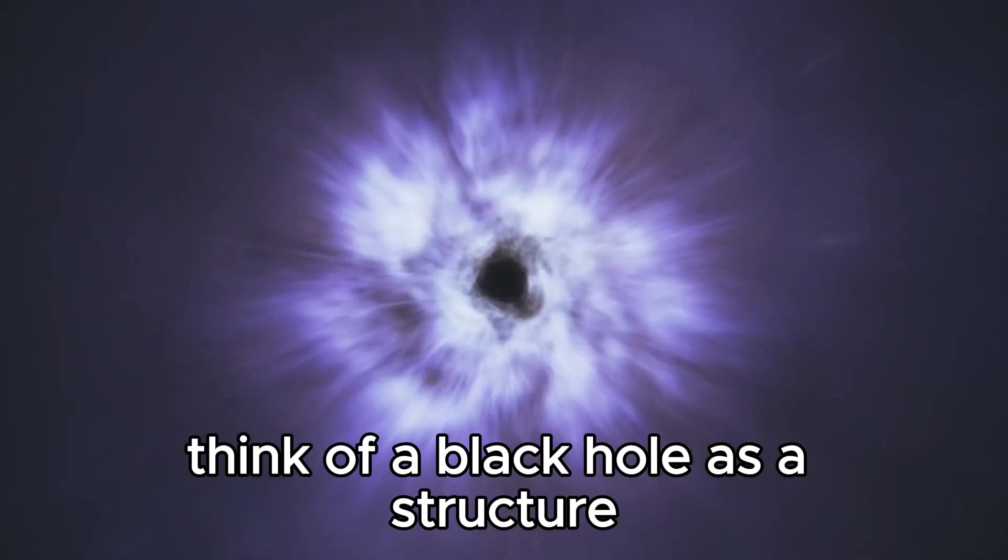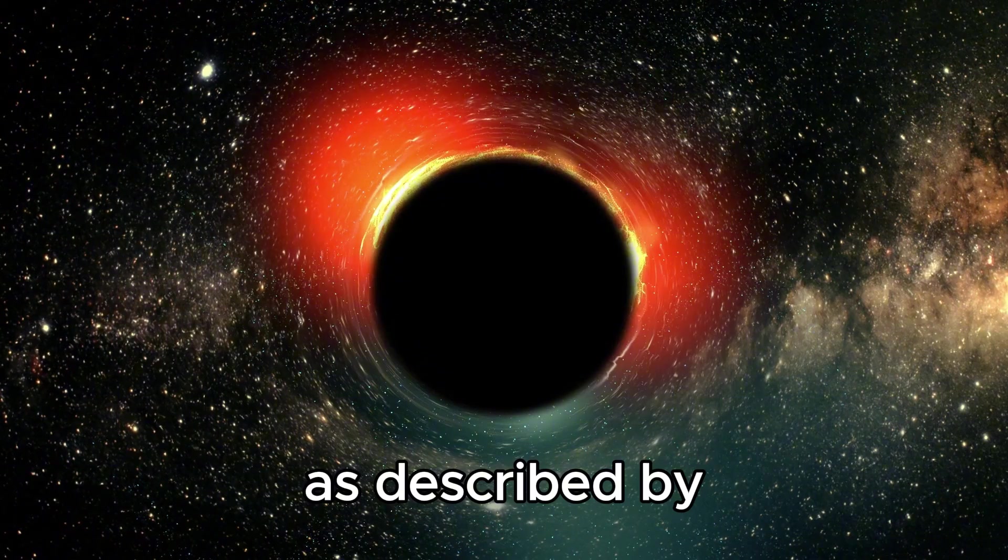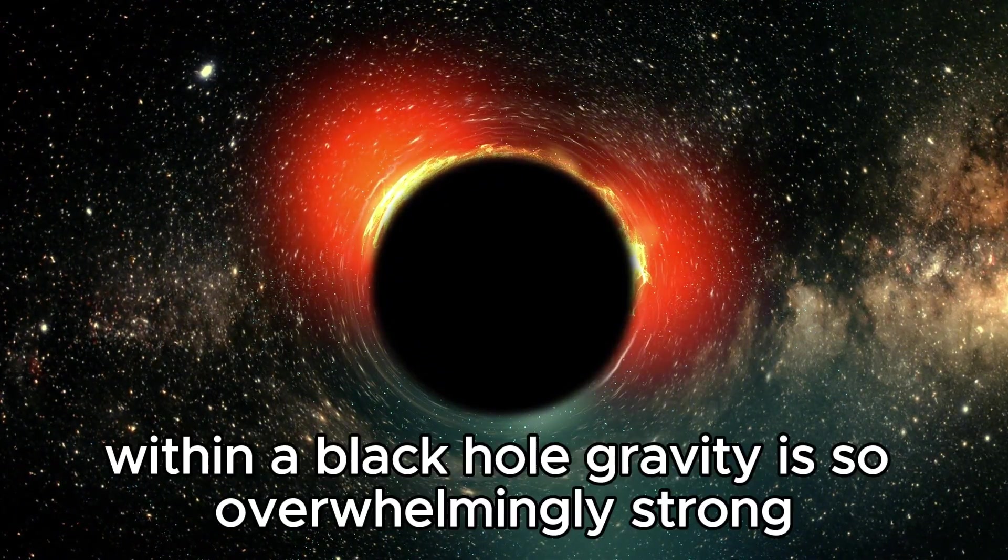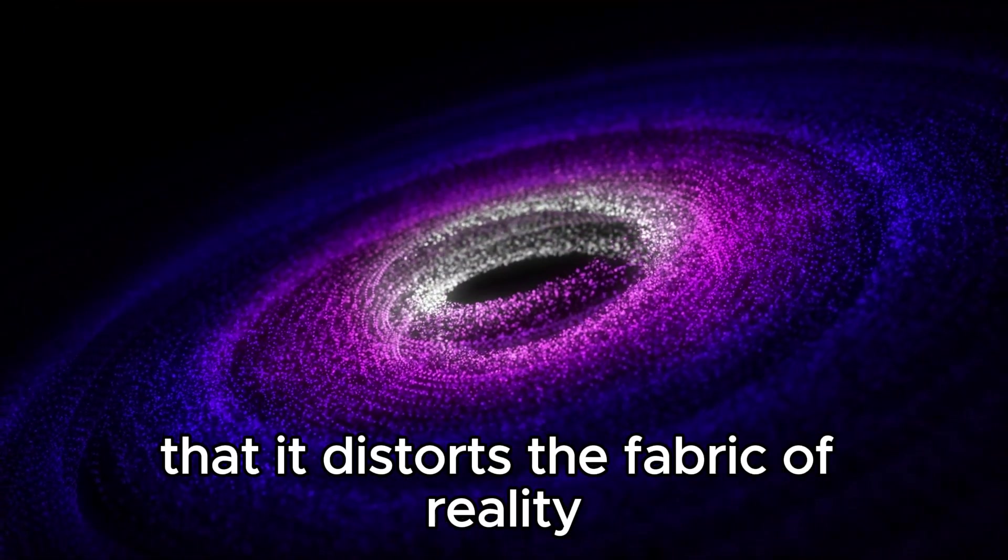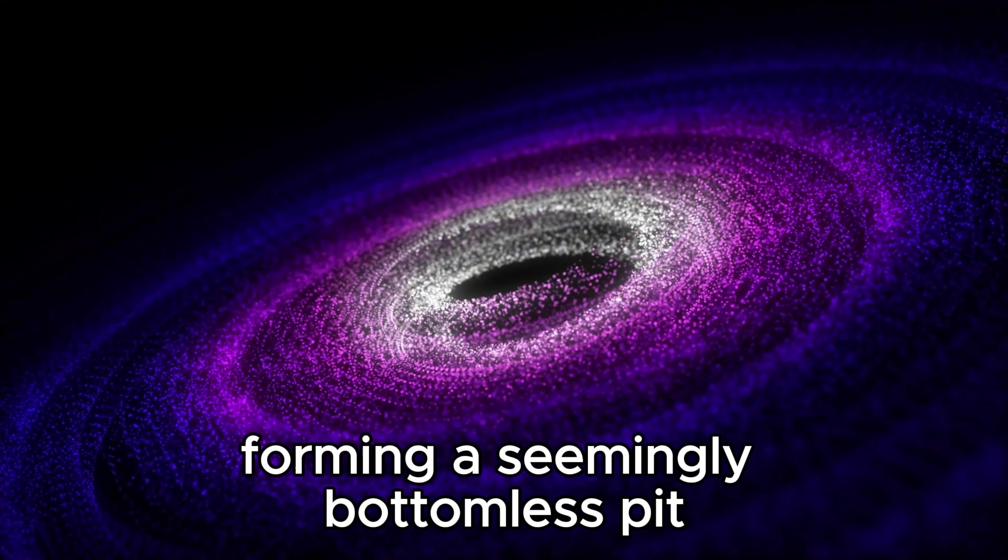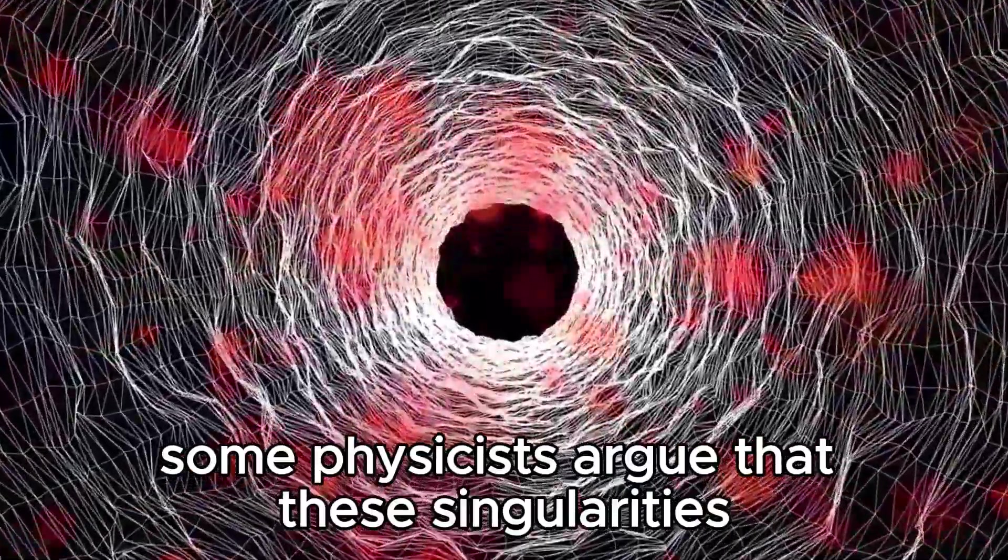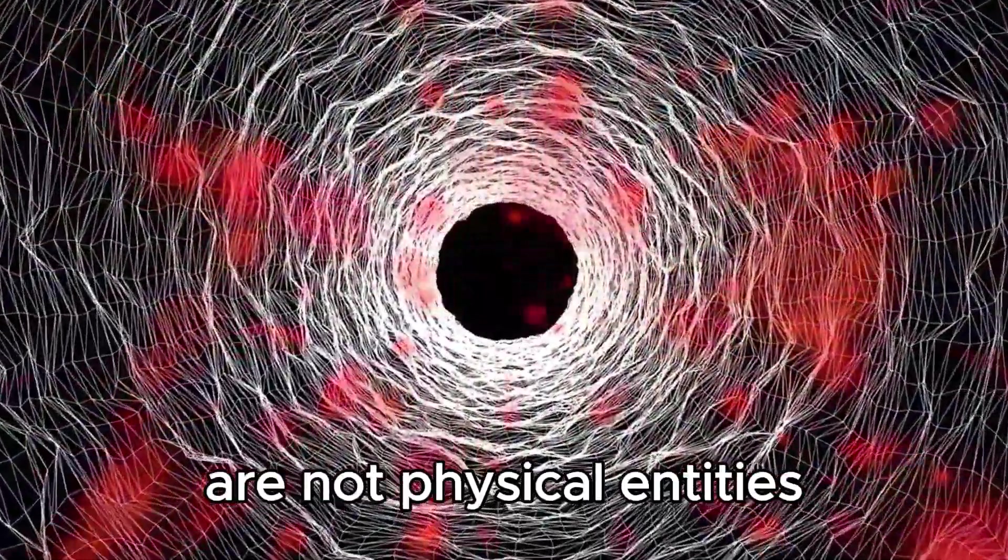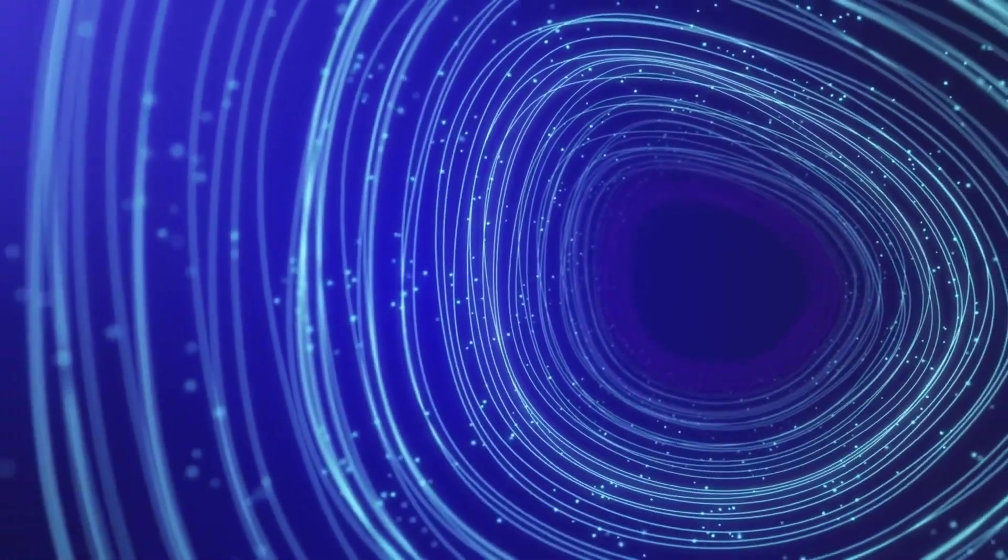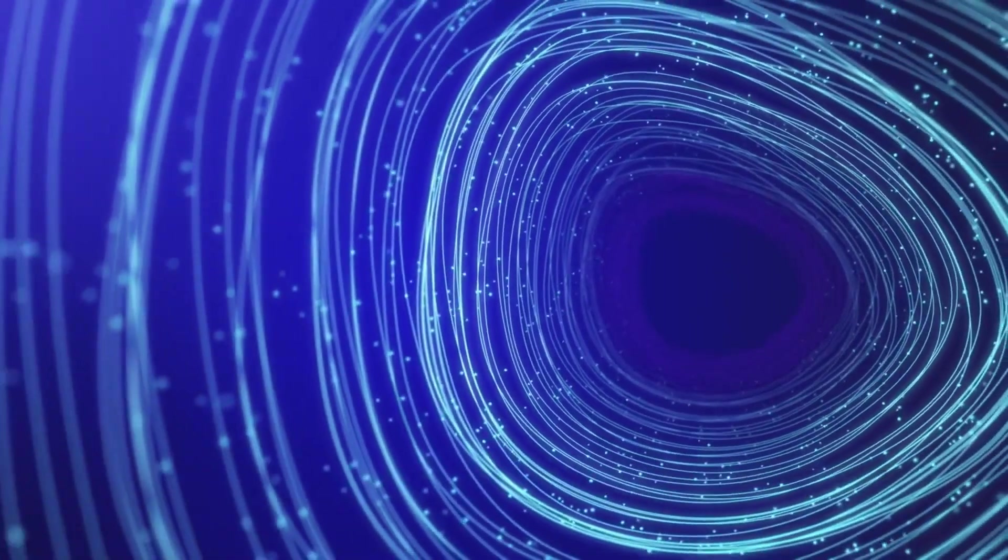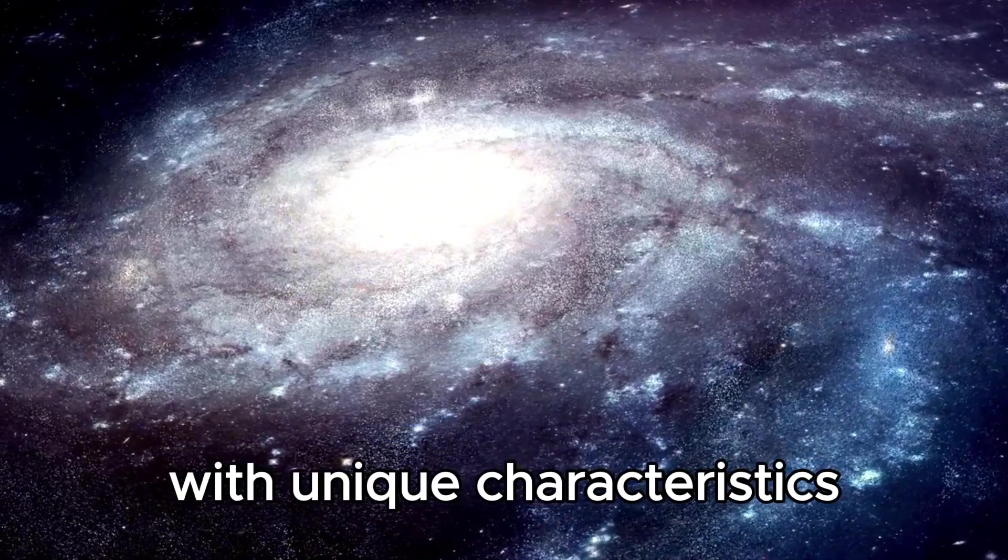How is this possible? Think of a black hole as a structure existing within the fabric of space and time, as described by Einstein's general theory of relativity. Within a black hole, gravity is so overwhelmingly strong that it distorts the fabric of reality, forming a seemingly bottomless pit known as a singularity. However, some physicists argue that these singularities are not physical entities, but rather mathematical artifacts. They propose that when we push the boundaries of general relativity, quantum effects come into play, preventing singularities from emerging inside black holes and giving rise to new regions of space-time with unique characteristics.